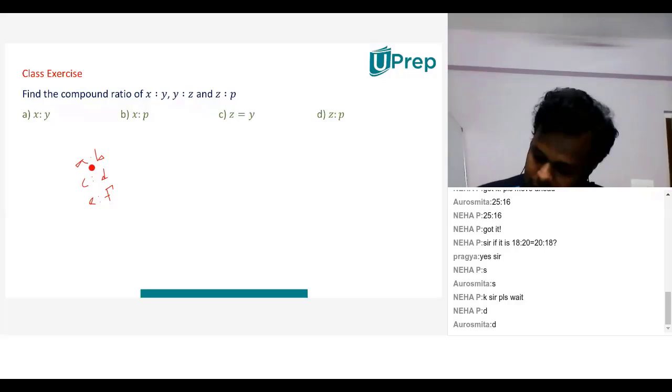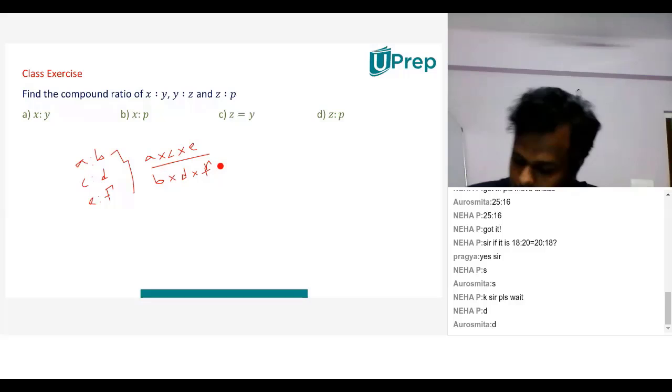Children if I have 3 ratios, A is to B, C is to D and E is to F. Now the compound ratio of these 3 will be A into C into E by B into D into F. A into C into E by B into D into F.